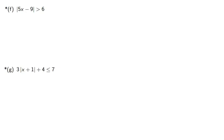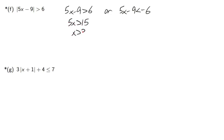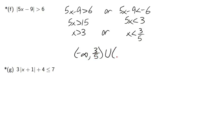These last two equations are for you to try — feel free to pause the video. The rules you use are very important. For the first one, since it's a greater than, we split into two: 5x − 9 > 6 or 5x − 9 < −6. Adding 9 to both sides and dividing by 5 gives the two solutions. In interval notation, we use parentheses for both pieces and don't forget the union symbol between the answers.